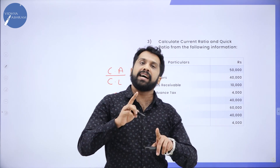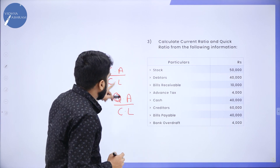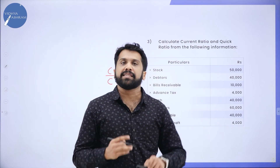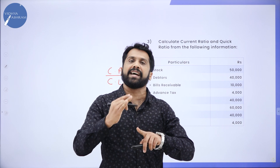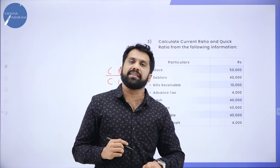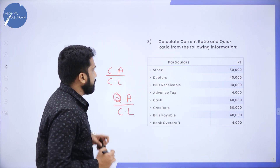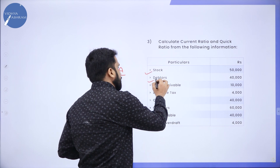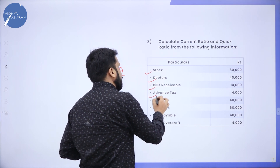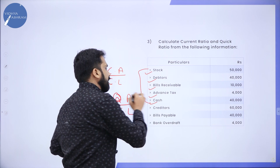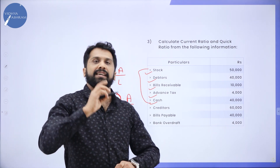As I told you, you have to remember formulas as well as which are Current Assets and which are Current Liabilities. In this problem, Stock, Bills Receivable, Advanced Tax, and Cash — these are called Current Assets. There are 5 items in total.